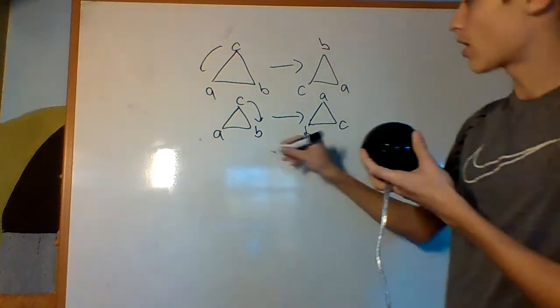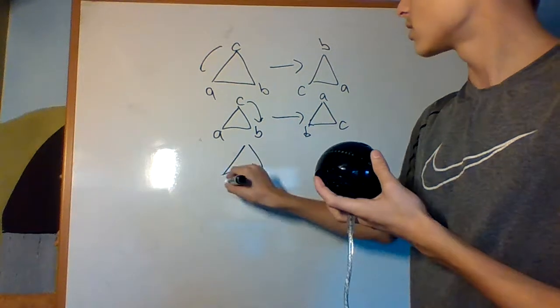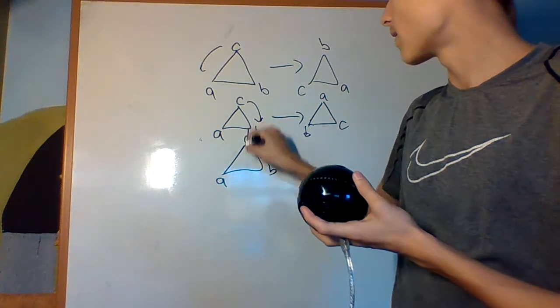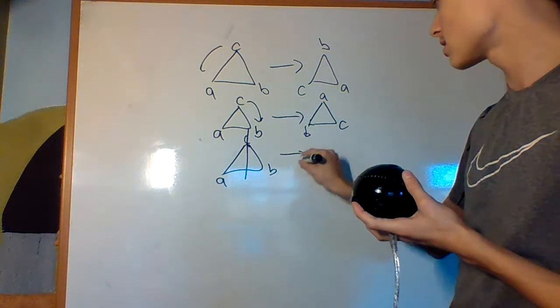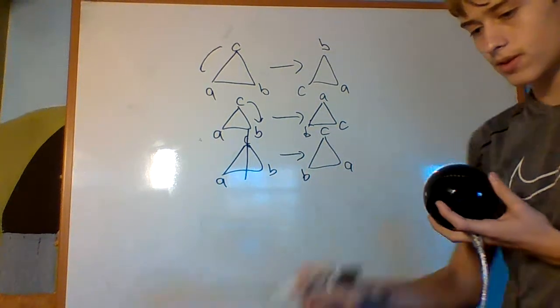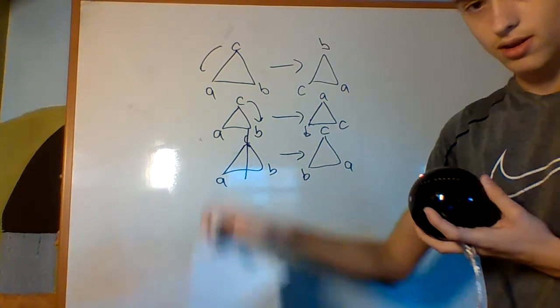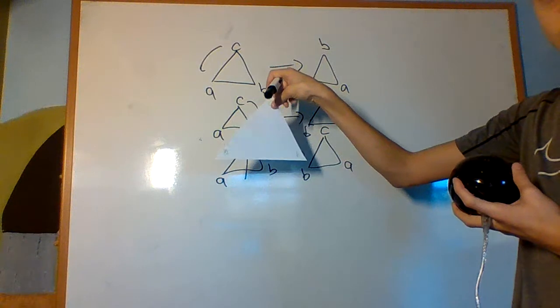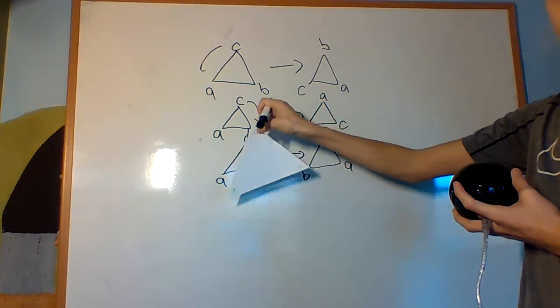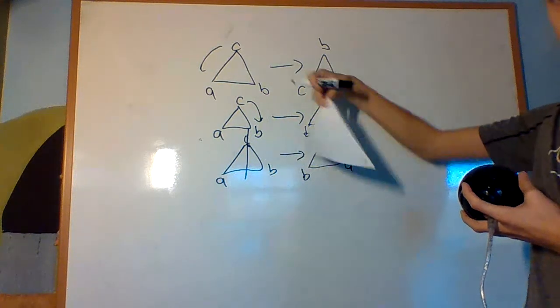Okay, now there's a couple other things I can do to this triangle. So, I can flip it along that axis. Okay, so that gives me this triangle, right? If I have this triangle right here, I flip it like that.